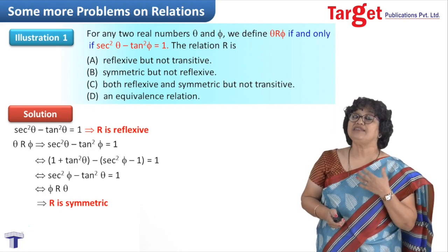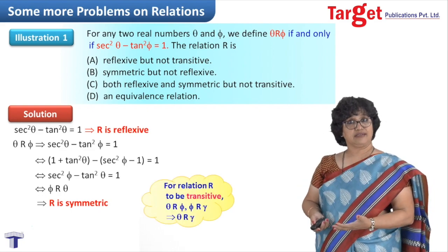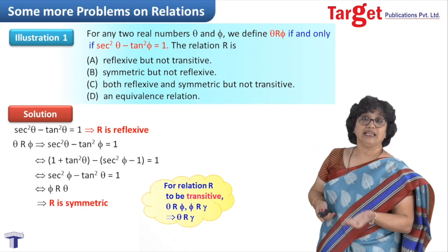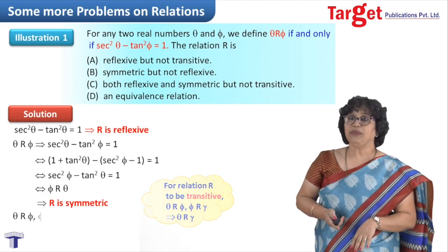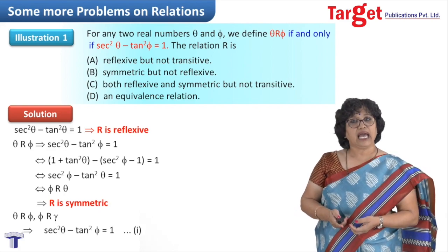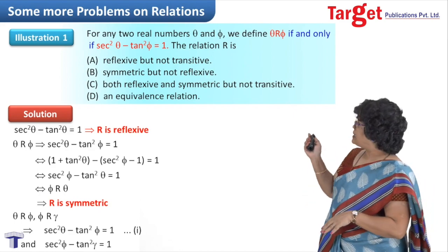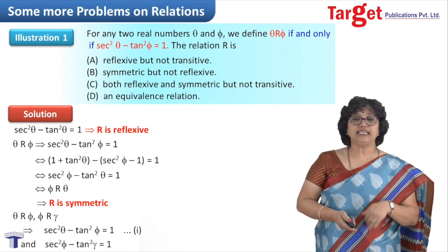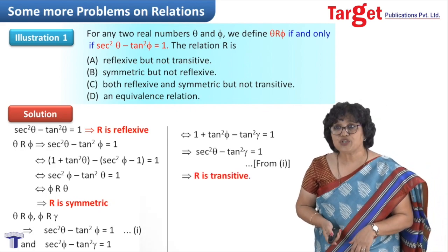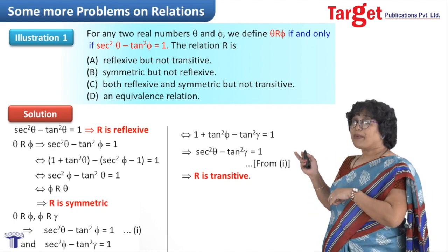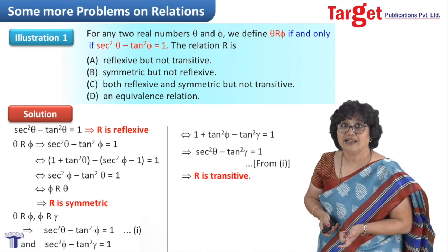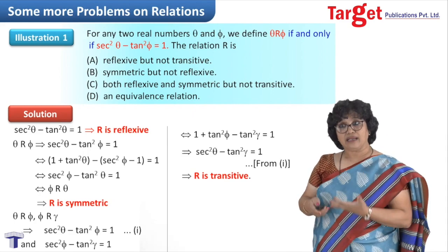Now let us check if it is transitive. We take three numbers: theta, phi, and gamma. Assume theta is related to phi and phi is related to gamma — that gives us sec² theta minus tan² phi = 1, and sec² phi minus tan² gamma = 1. For the second equation, we write sec² phi as 1 + tan² phi and simplify. Adding the equations leads to sec² theta minus tan² gamma = 1, which means theta is related to gamma. So the relation is transitive.